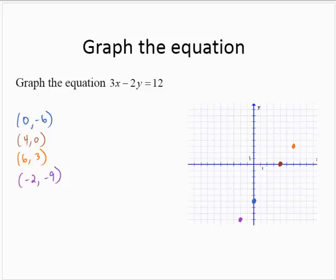Again, these points appear to be collinear. So drawing the line that passes through those points would graph the equation.